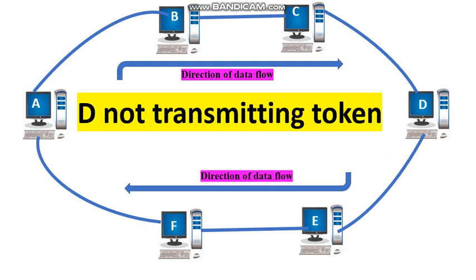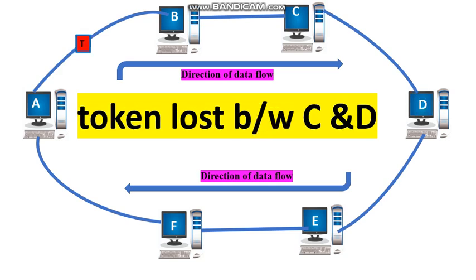Several problems may occur during the transmission of a token in the token passing access method. In one scenario, a station which has received the token may neglect to retransmit the token to the next station — here, station D received the token but is not forwarding it, so the token is lost. In some cases, the token may also be destroyed by noise — here, the token is destroyed in between stations C and D. In both cases, there is no token on the ring.